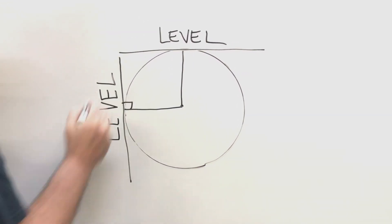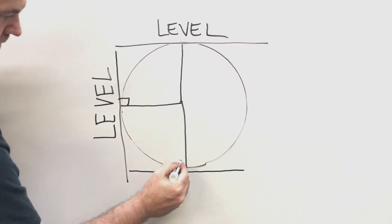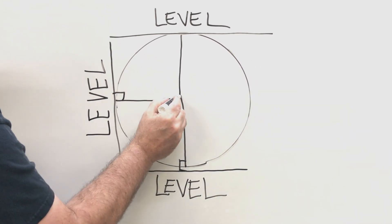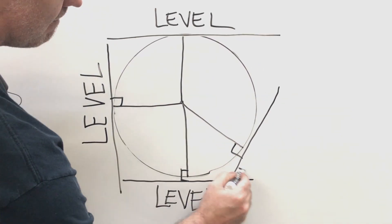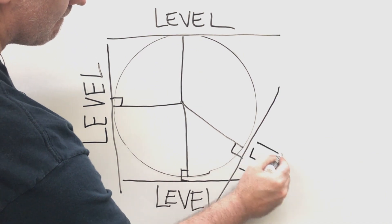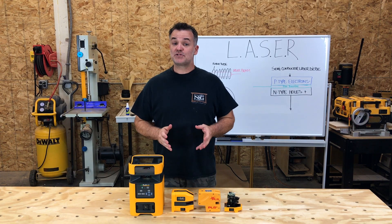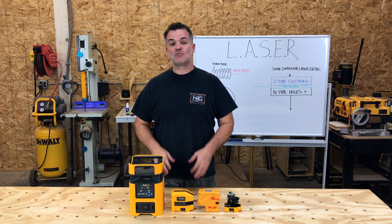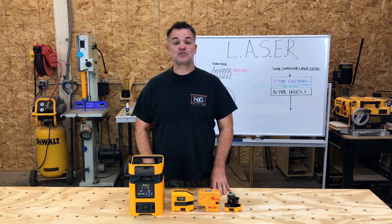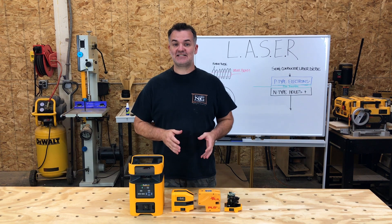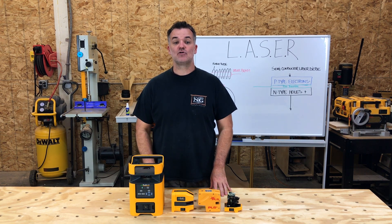That would be level. You can see the orientation of the line changes as you move along the surface, whether vertical, horizontal, or diagonal. To give a little perspective, the Earth's circumference around the equator is 24,901 miles. That means every 69.17 miles, there's a one degree change in level.